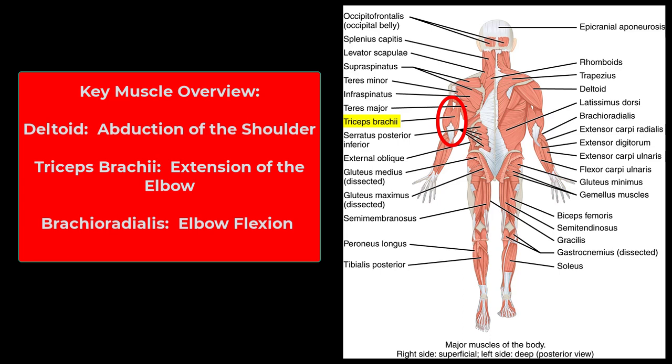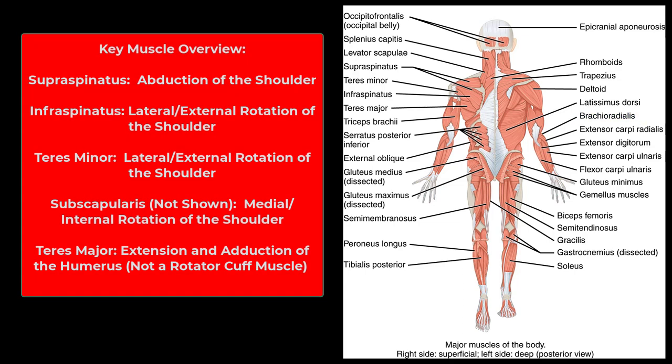Now the triceps brachii: triceps tells us it has three heads, brachii tells us it's on the upper arm. It's on the back of the upper arm, so its job is to extend the elbow — to straighten your arm out. The next four muscles make up your rotator cuff. First, the supraspinatus — right above the spine of the scapula — its job is abduction of the shoulder.